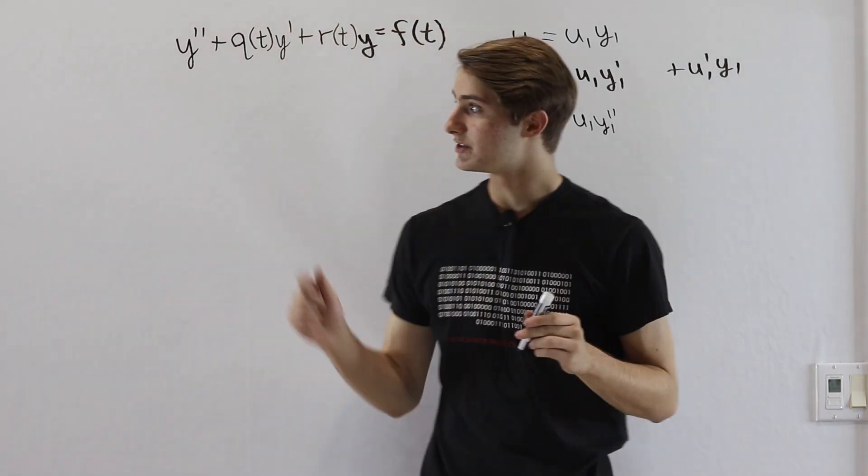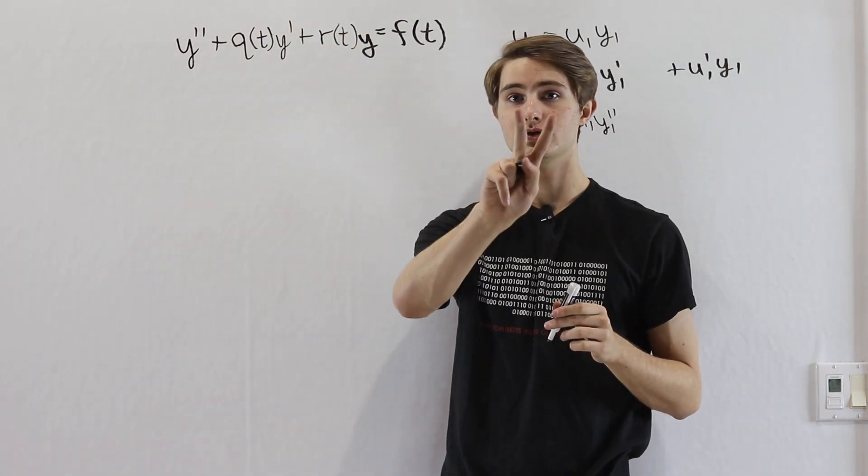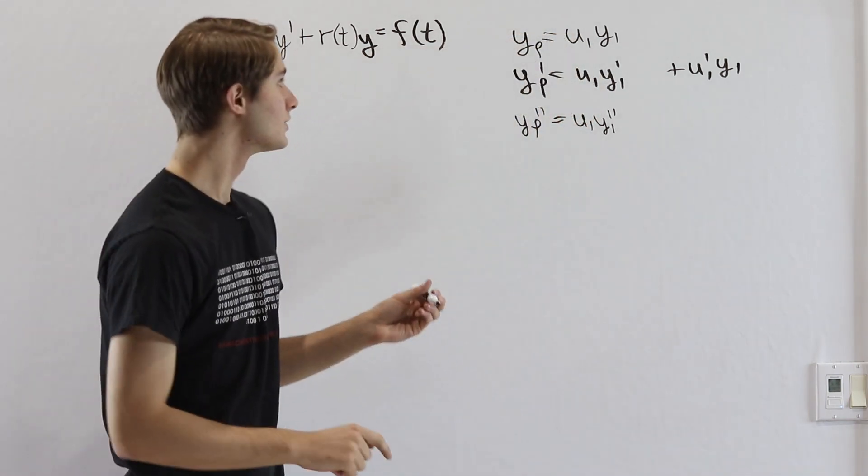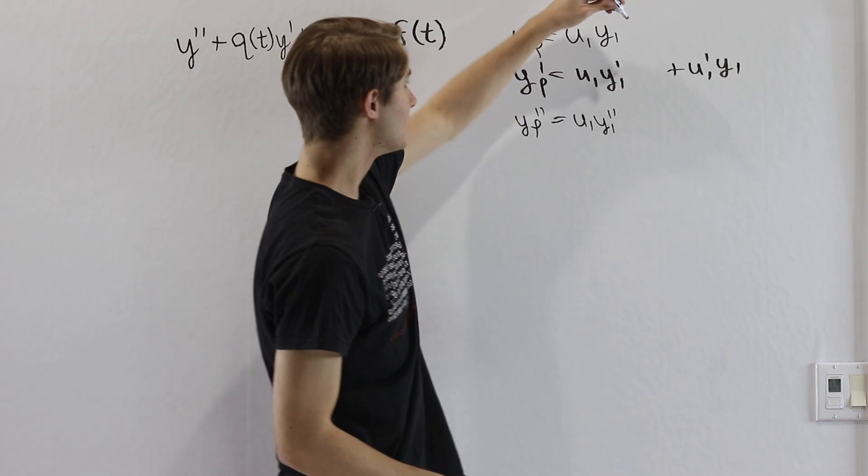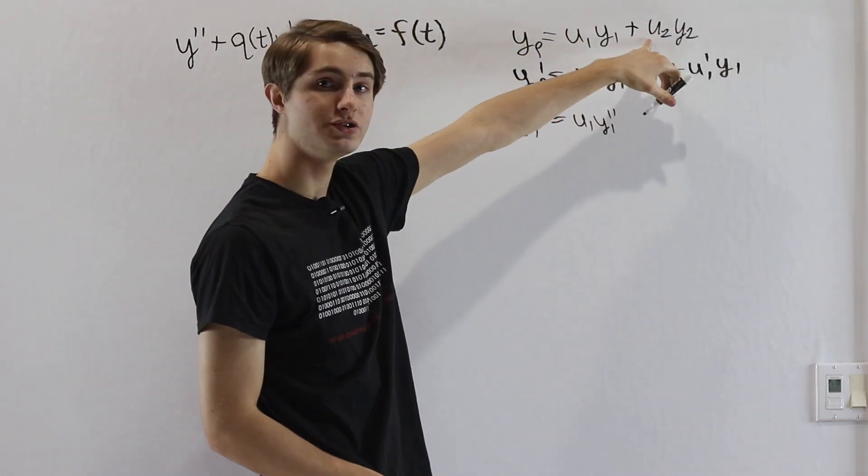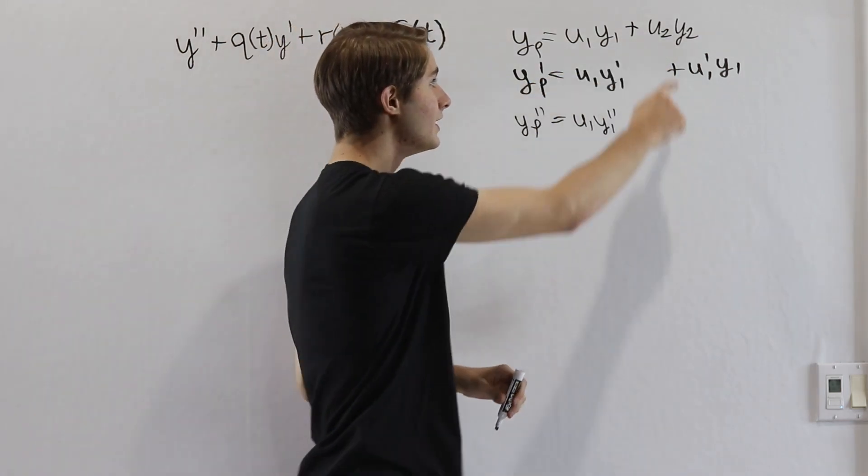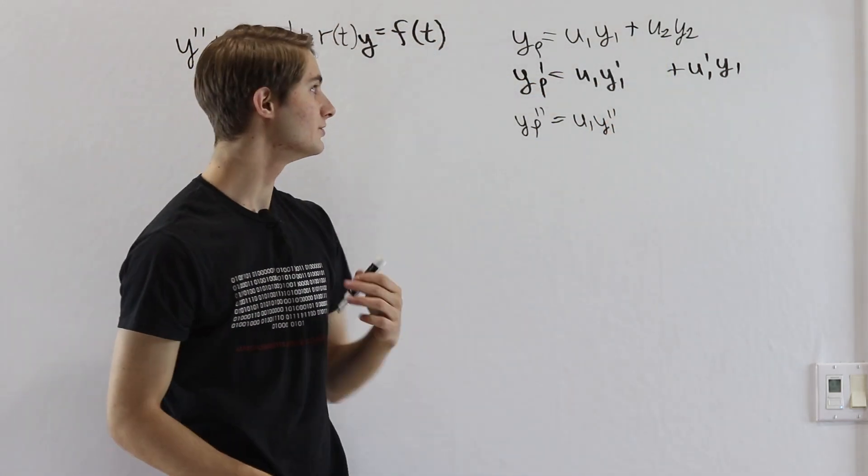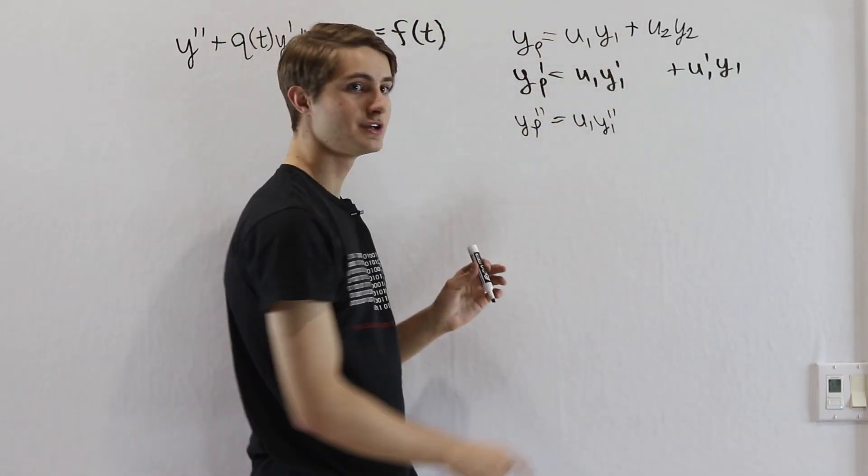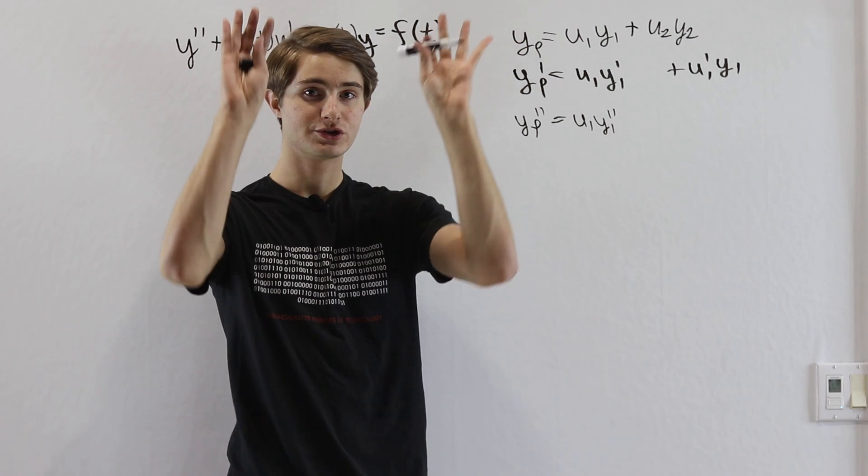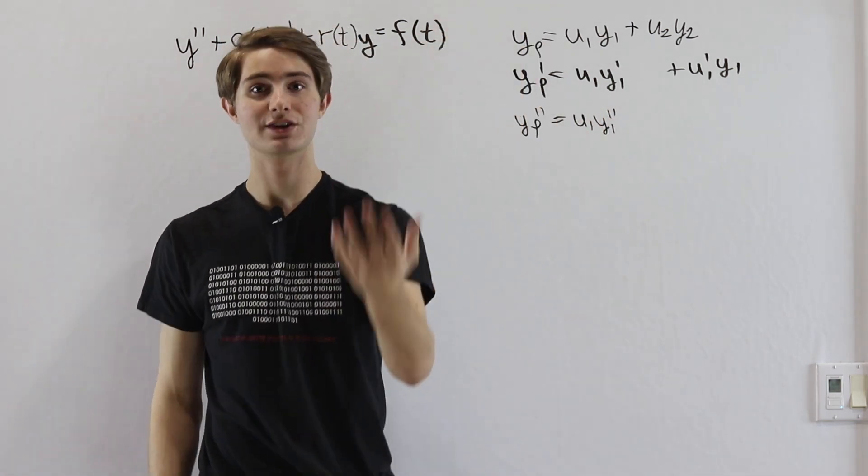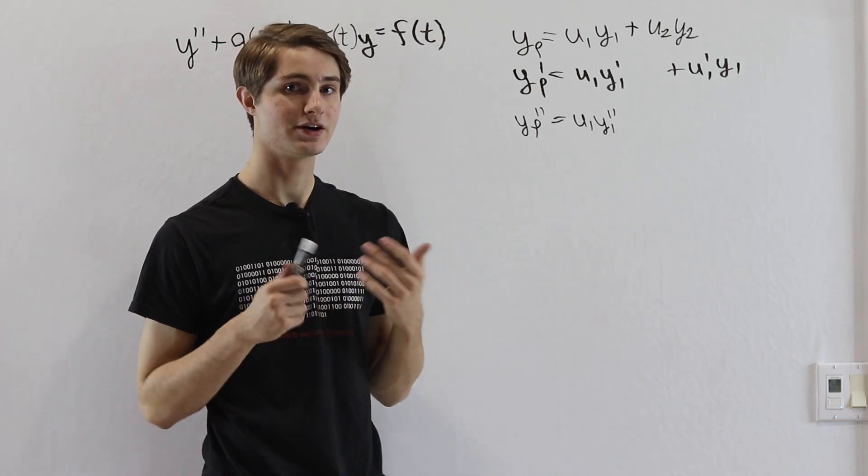We know because this is a second-order differential equation that there are two homogeneous solutions that are linearly independent. So what we can do is take our u1y1 and add u2y2. So u2 is a new function that we don't know, and y2 is our second homogeneous solution. The reason this is cool is now that we have two functions, we only have one equation to restrict two separate functions, which means we actually have the ability to add a second restriction that might make our job easier.